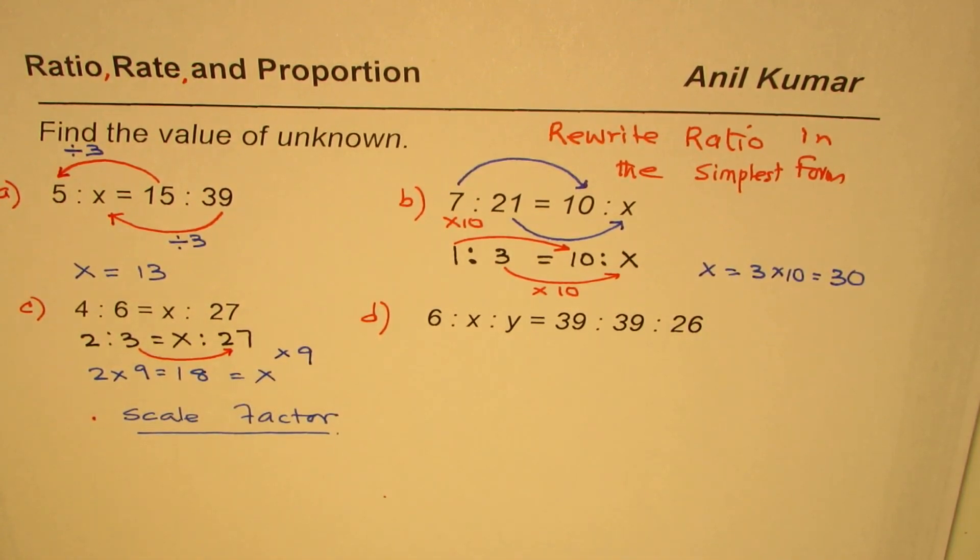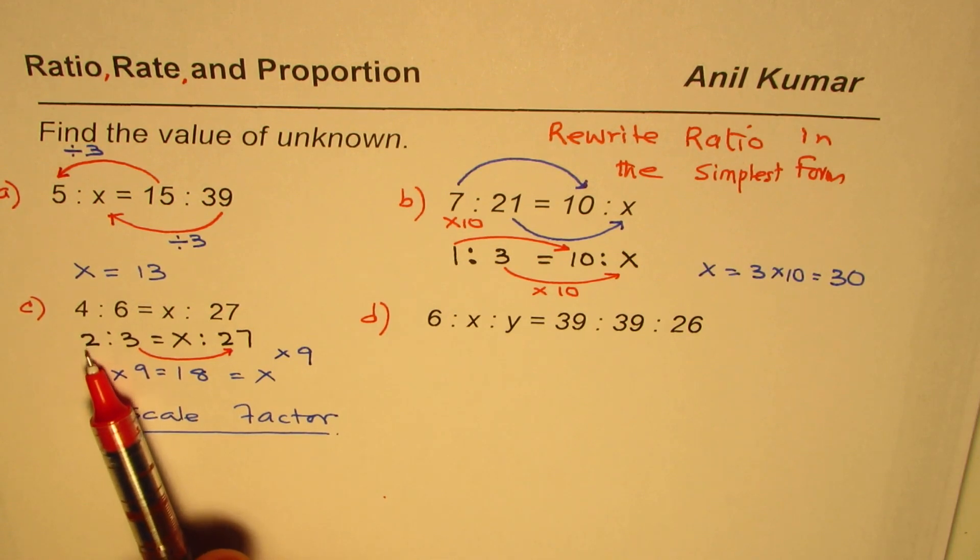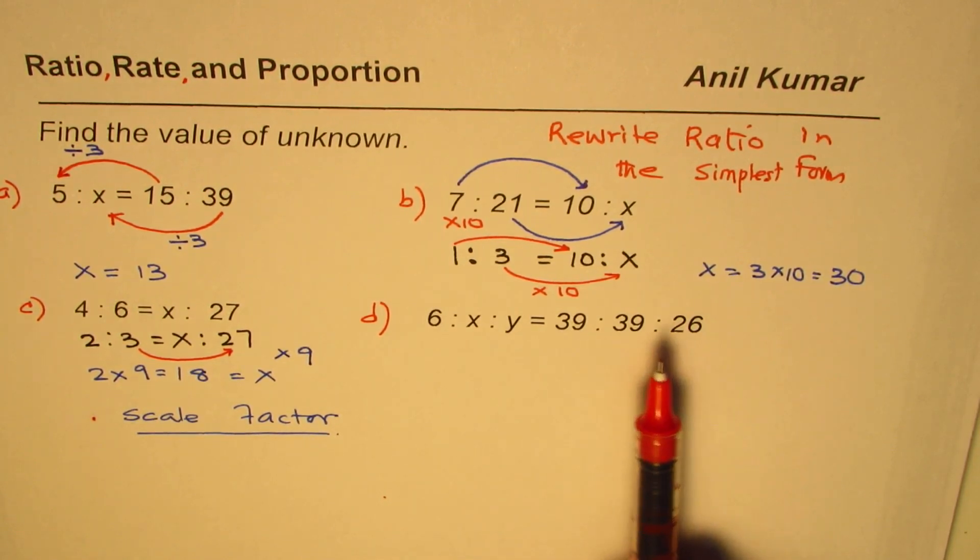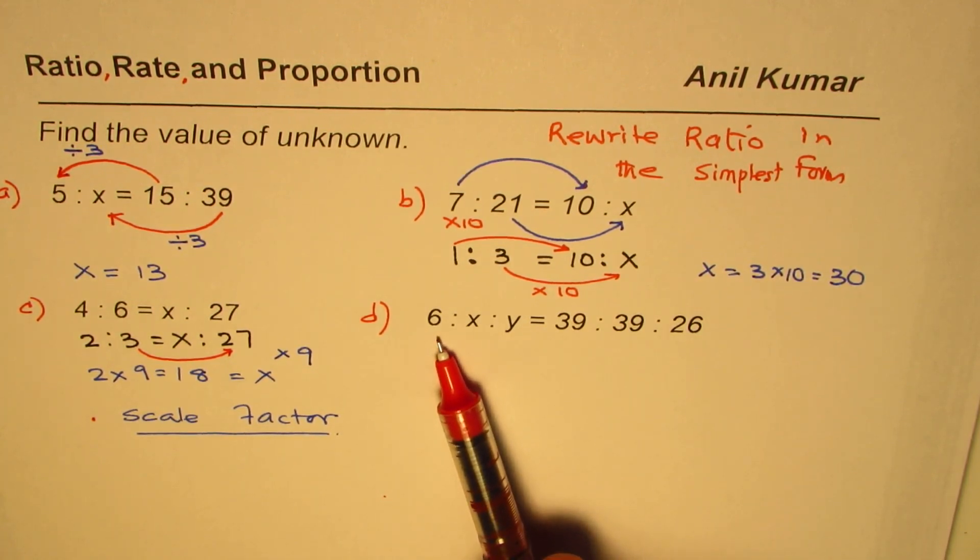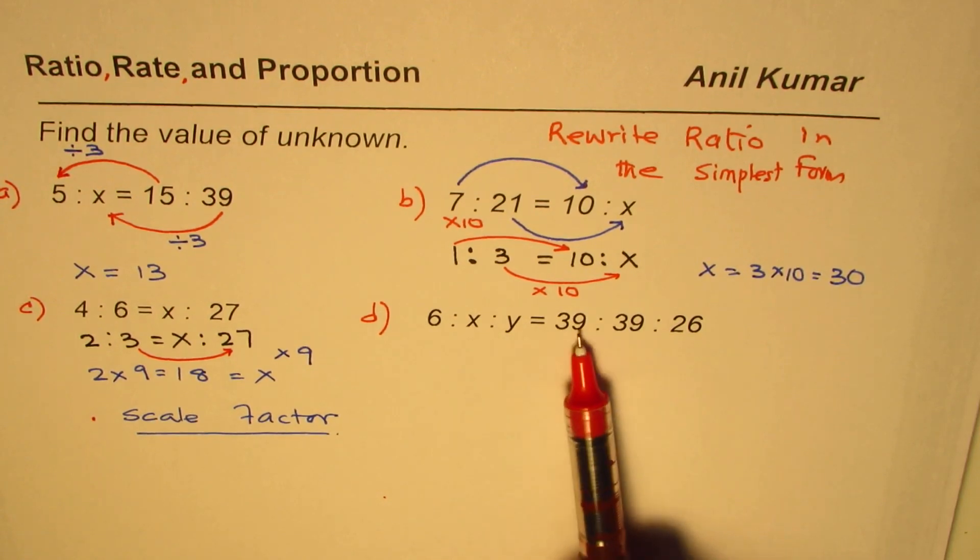So that is how you could do ratio questions by finding a scale factor. So 9 is the scale factor from 2 is to 3 to x is to 27. Let's do the one which has got three different values. Now on the right side we have 39, 39, 26. On the left side, 6, x, y.